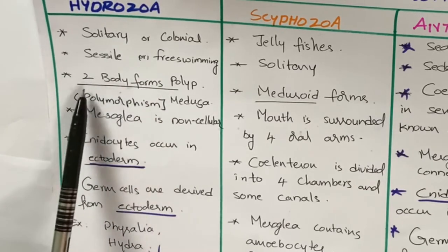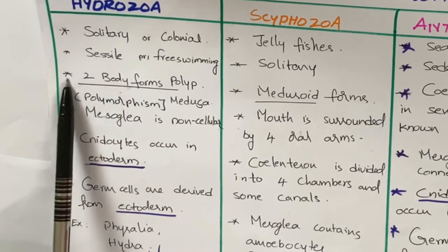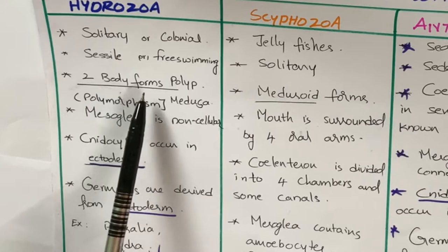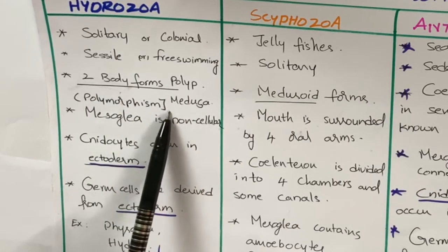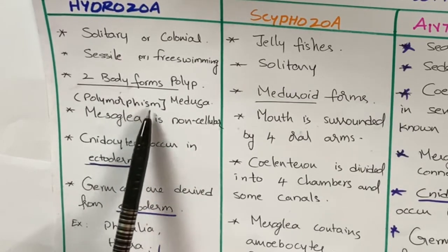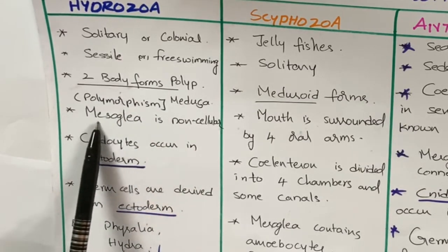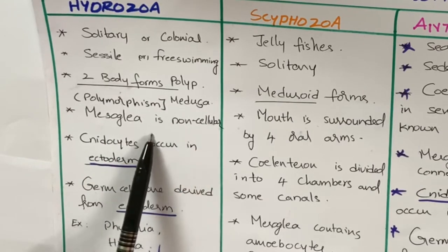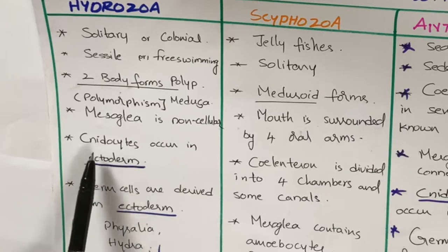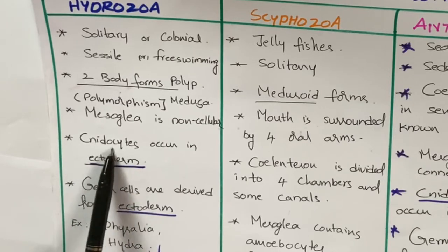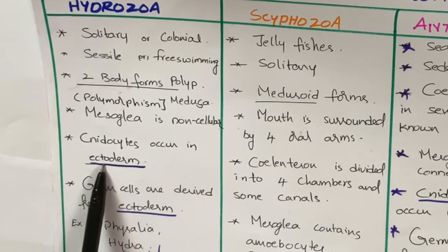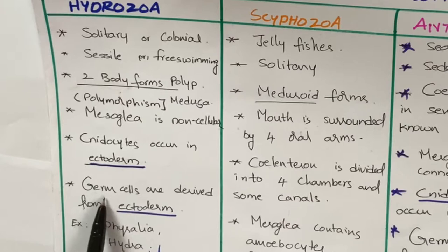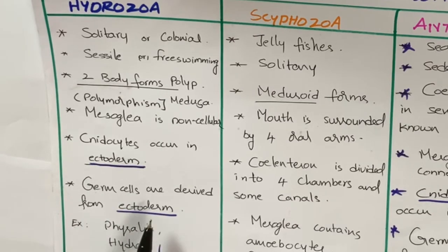Hydrozoa can be sessile or free swimming. The body form is polyp and medusoid form, and they show polymorphism. The mesoglia here is non-cellular — cells are absent in mesoglia. Nidocytes occur in the ectoderm only. Germ cells are derived from the ectoderm.